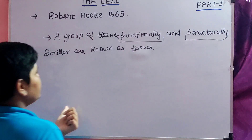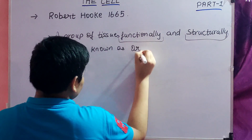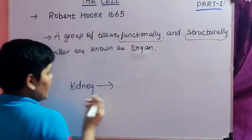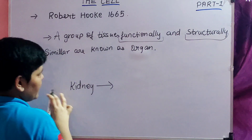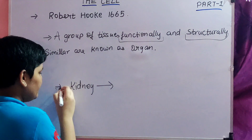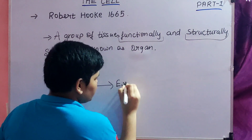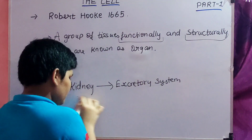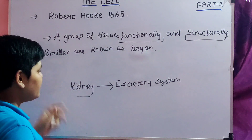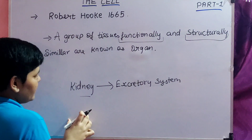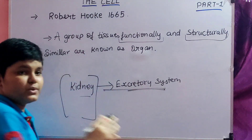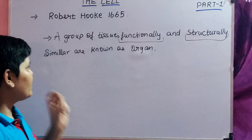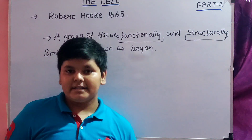Similarly, a group of tissues that are functionally and structurally similar are known as an organ. For example, an organ like the kidney — combined with the urinary bladder, urethra, and related structures — forms an organ system known as the excretory system. We have so many organs in our body, but here we will only be discussing about cells.